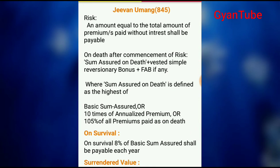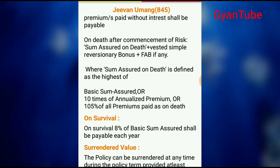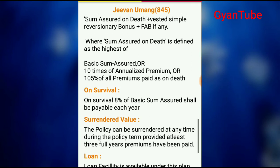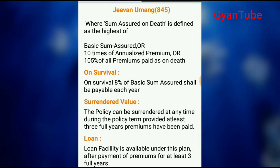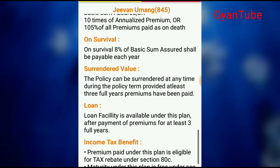On death after the commencement of risk, the sum assured on death plus vested simple reversionary bonus plus final addition bonus will all be included and paid. Here, sum assured on death is defined as the highest of: basic sum assured, or 10 times the annualised premium, or 105% of premiums paid as on date of death.